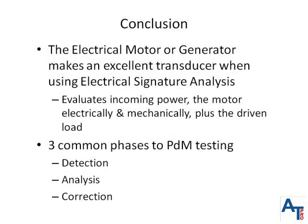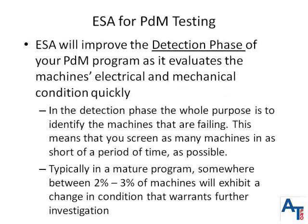The electrical motor or generator makes an excellent transducer when using electrical signature analysis. ESA evaluates incoming power, the motor electrically and mechanically, plus the driven load. Three common phases to predictive maintenance include detection, analysis, and correction. Electrical signature analysis will improve the detection phase of your predictive maintenance program because it allows the technician or engineer to quickly evaluate the entire motor system from incoming power through the driven load. The data collection process using ESA after the electrical connections are made takes about one minute. Moreover, there are permanent connection boxes that can be installed so the electrical panel does not need to be opened in order to collect the data. The collection box not only allows fast, accurate, and repeatable data collection, but also protects the technician from potential exposure to an arc flash event.